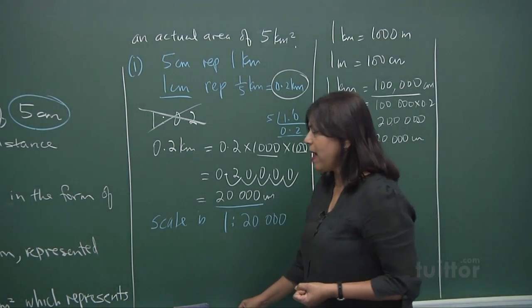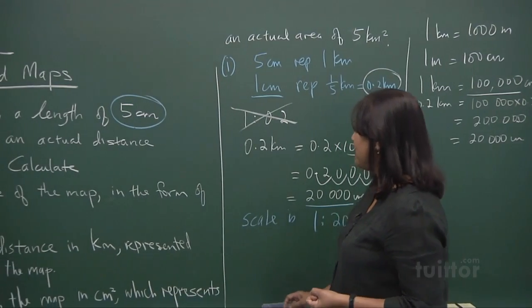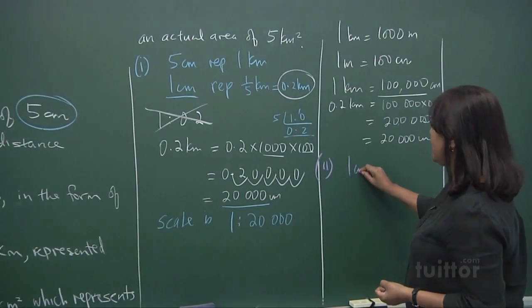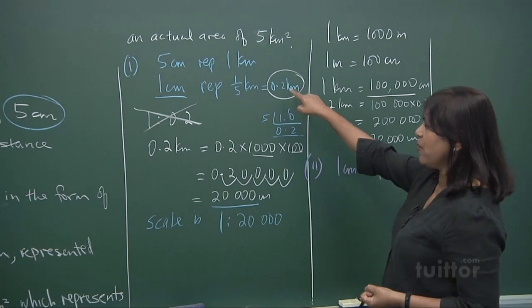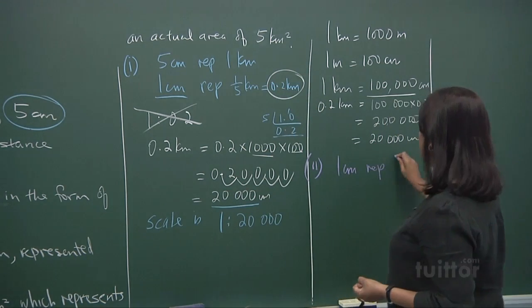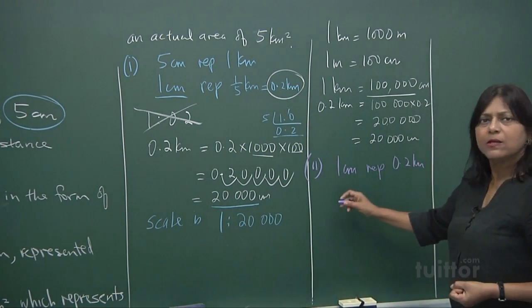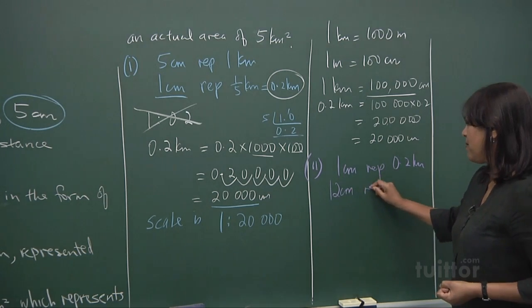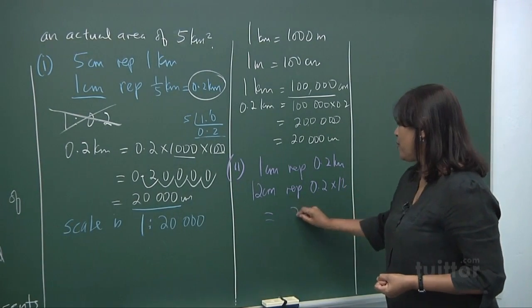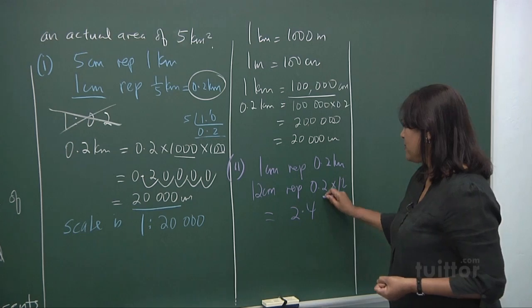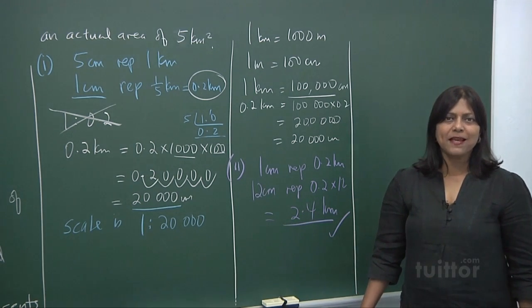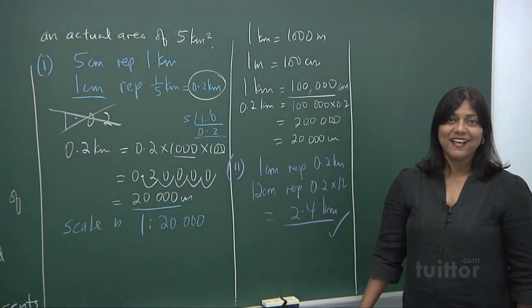Now part 2, the actual distance represented by 12 cm. So what is 12 cm? Now you know that 1 cm represents, now we go because they want it in kilometers, so 1 cm represents 0.2 km. So what does 12 cm represent? It multiplies 0.2 times 12. What is 12 times 2? 24. 1 decimal place, so it's 2.4 kilometers. So 12 cm represents 2.4 kilometers.